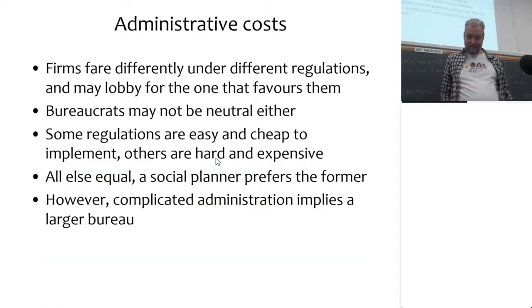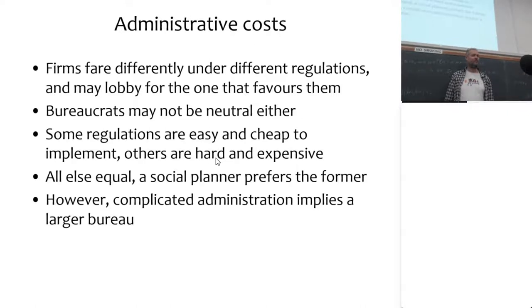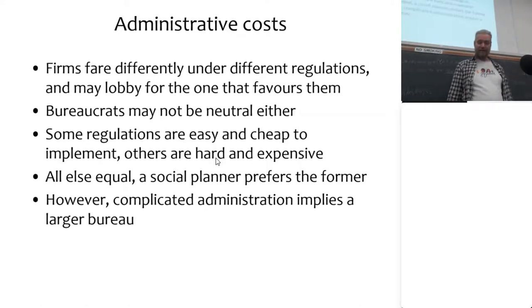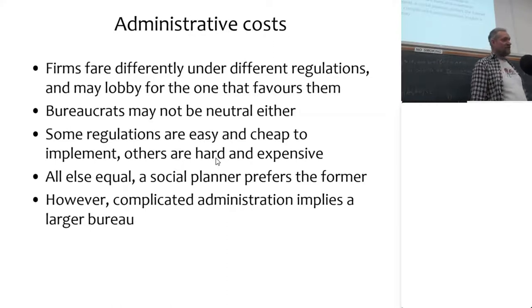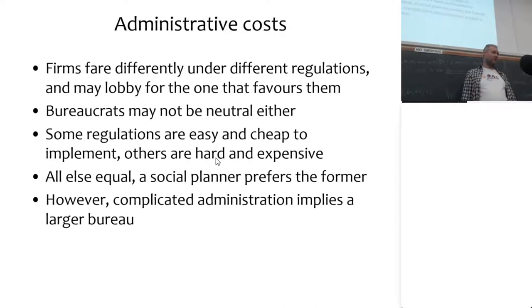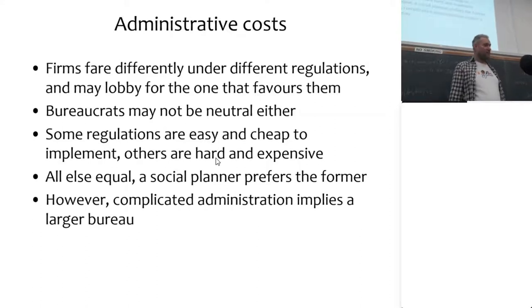There's another reason: different firms fare differently under different regulations and may lobby for the one that favors them. Bureaucrats may not be neutral either. Some regulations are easy and cheap to implement; others are hard and expensive. A neutral social planner would choose those that are cheap both to administer and impose low costs on society.